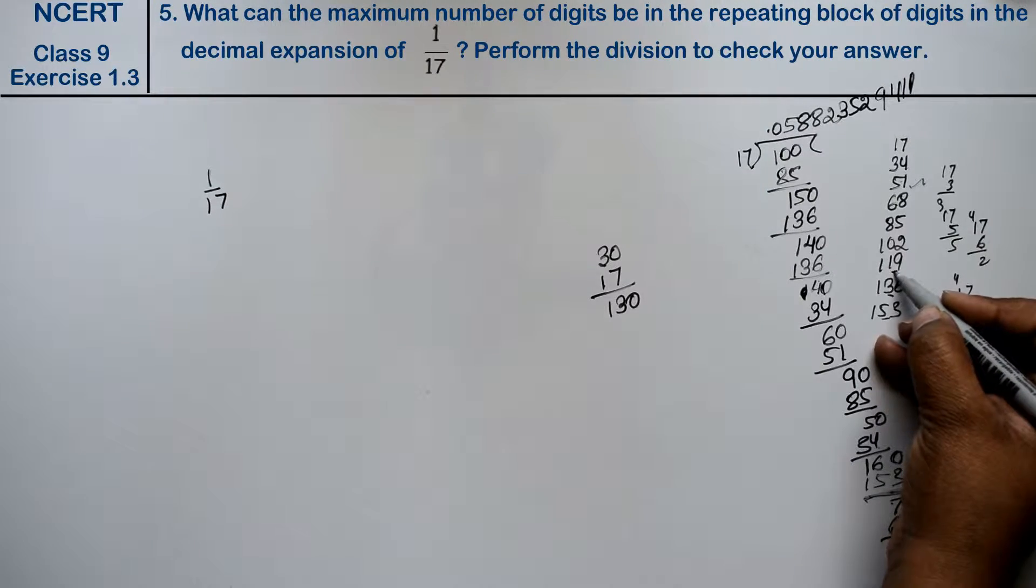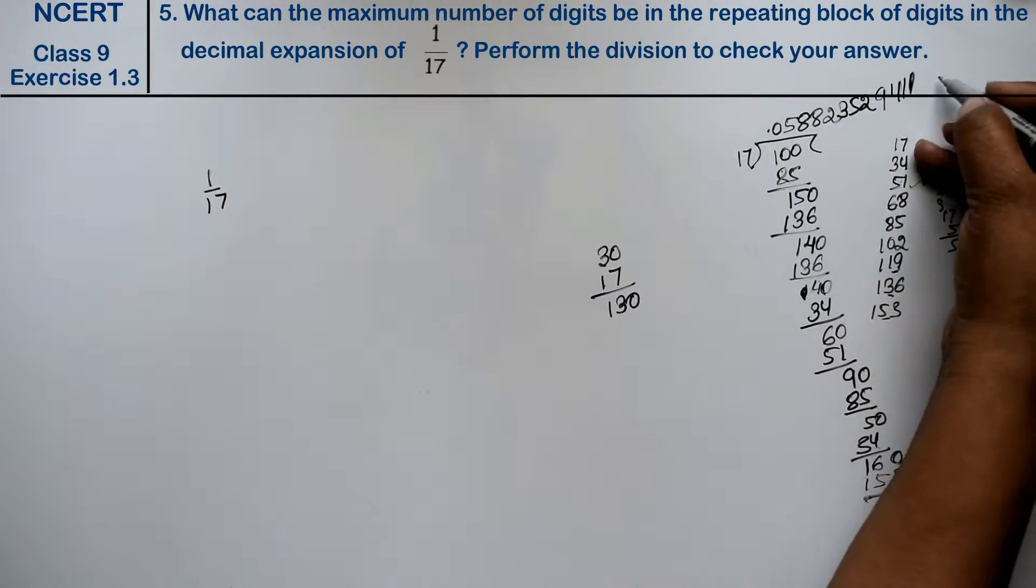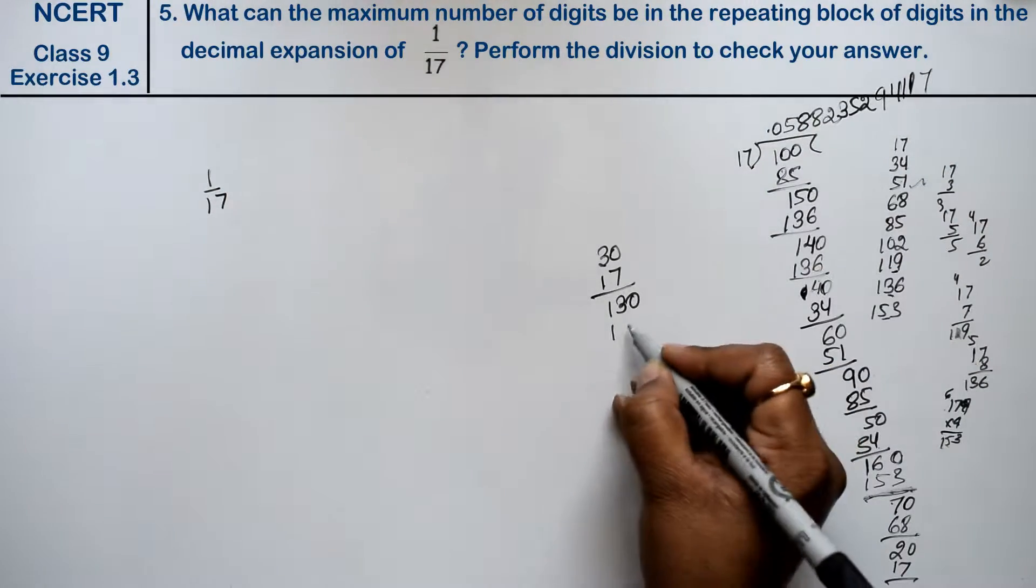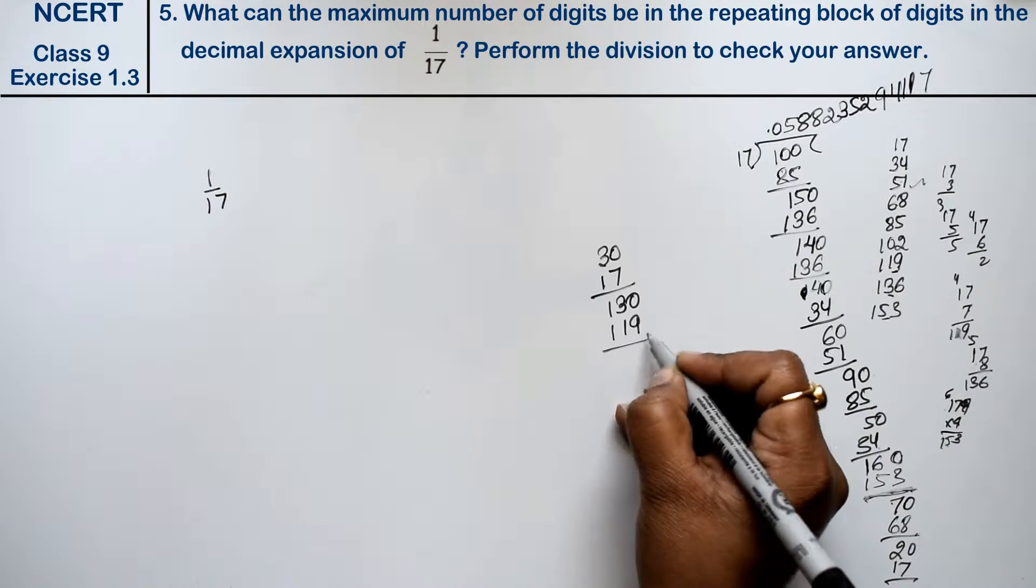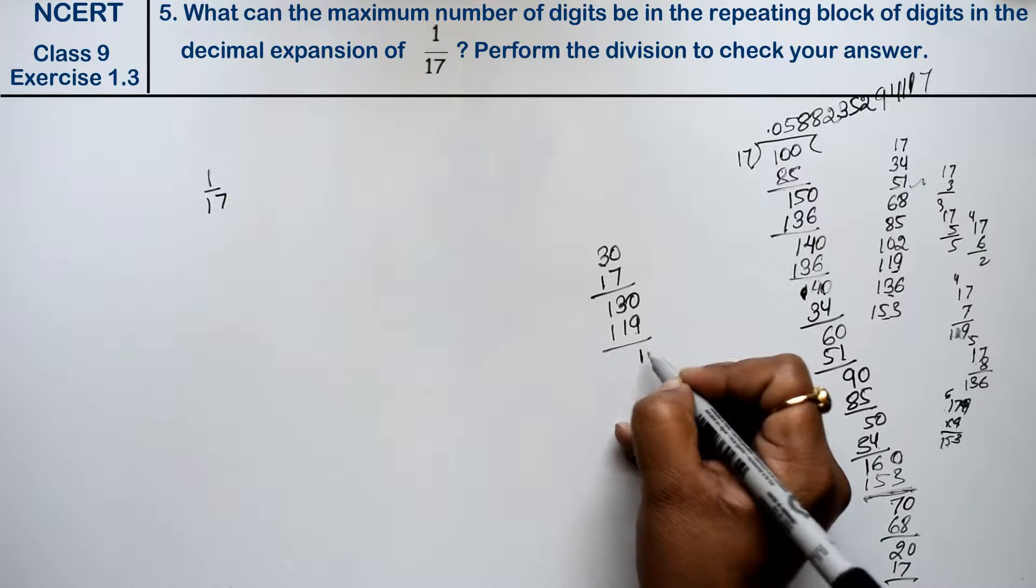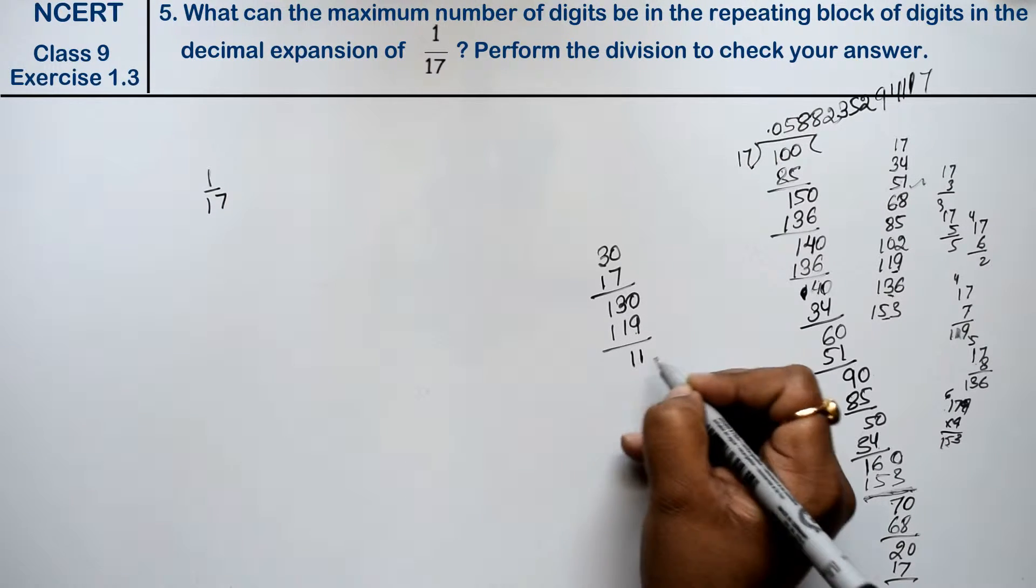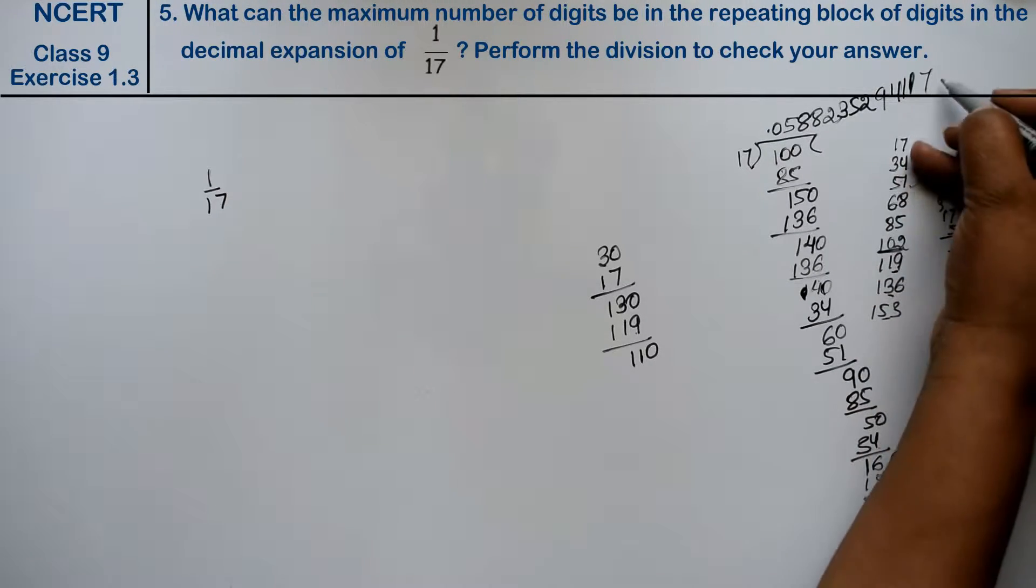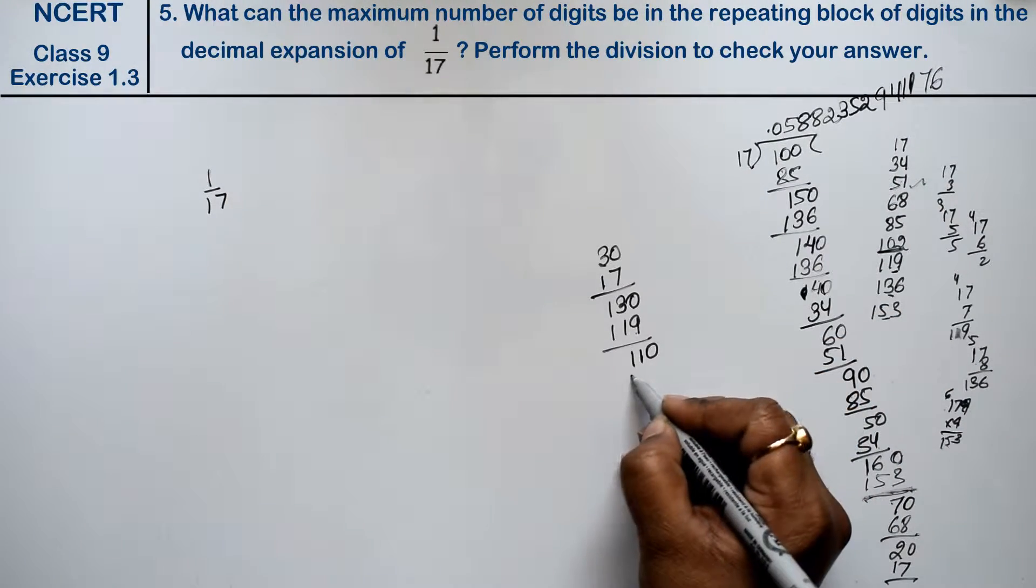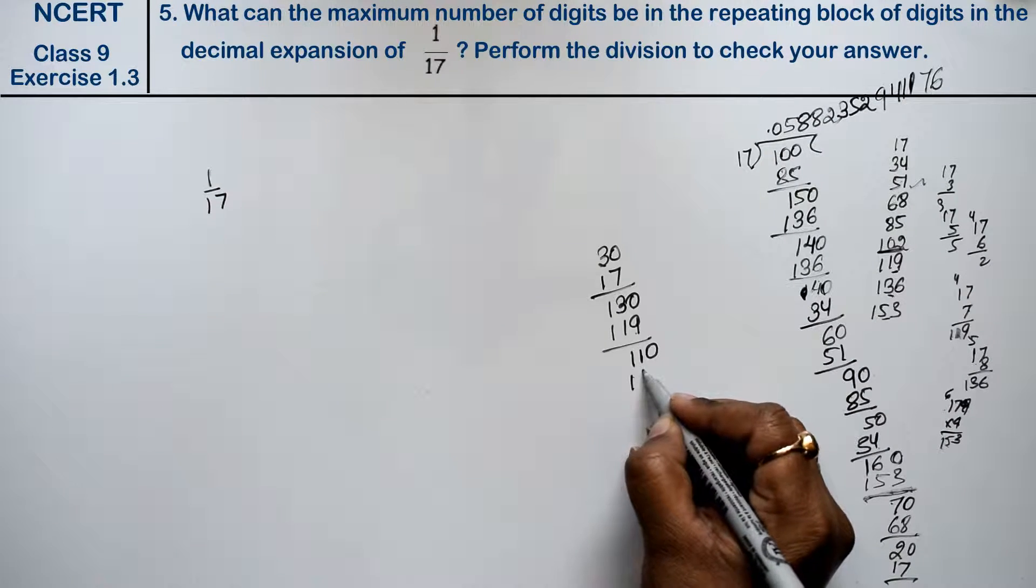30 becomes 300, 6 times 17 equals 102. See, this continues. We get 1, 0, 2, then 80. Now we subtract and continue the division process step by step.